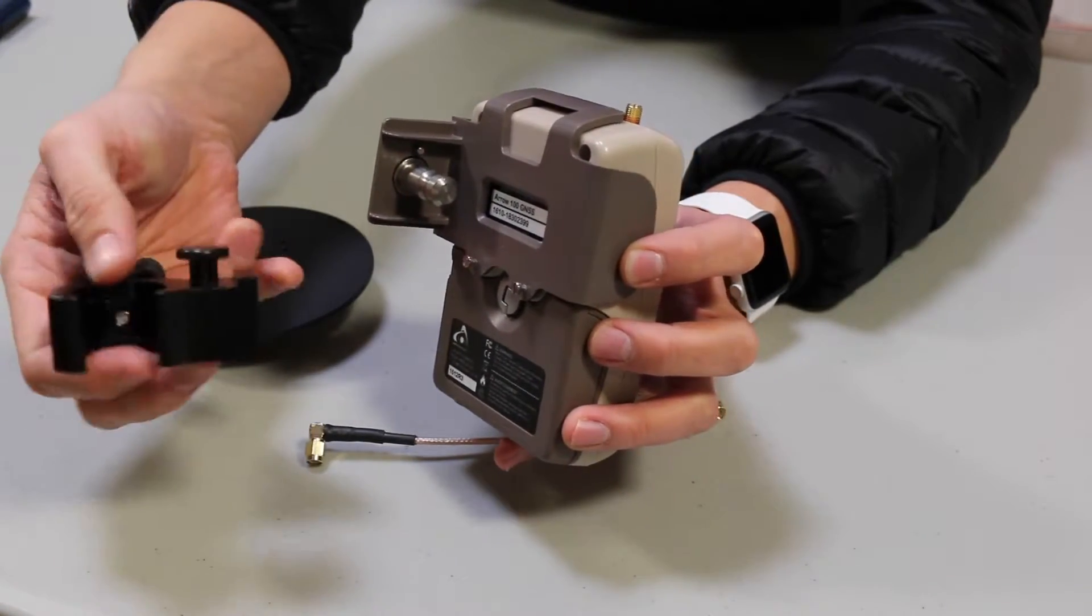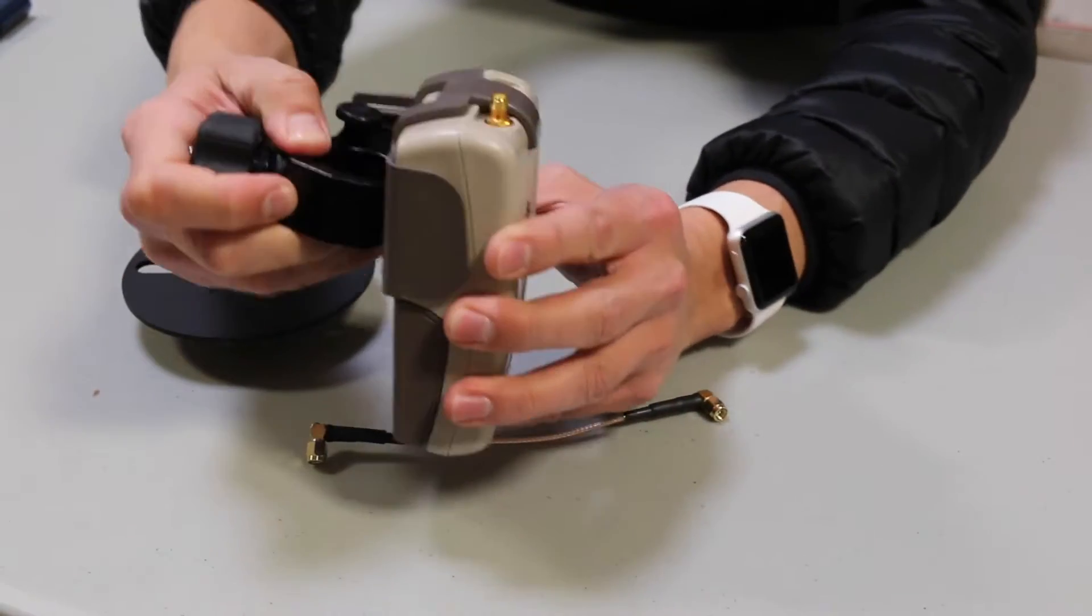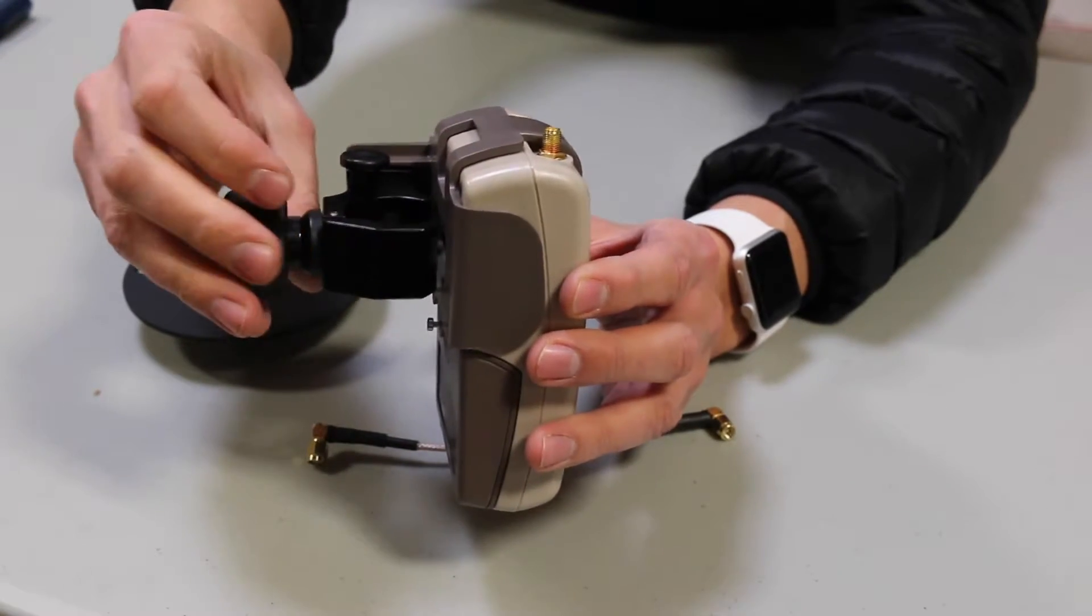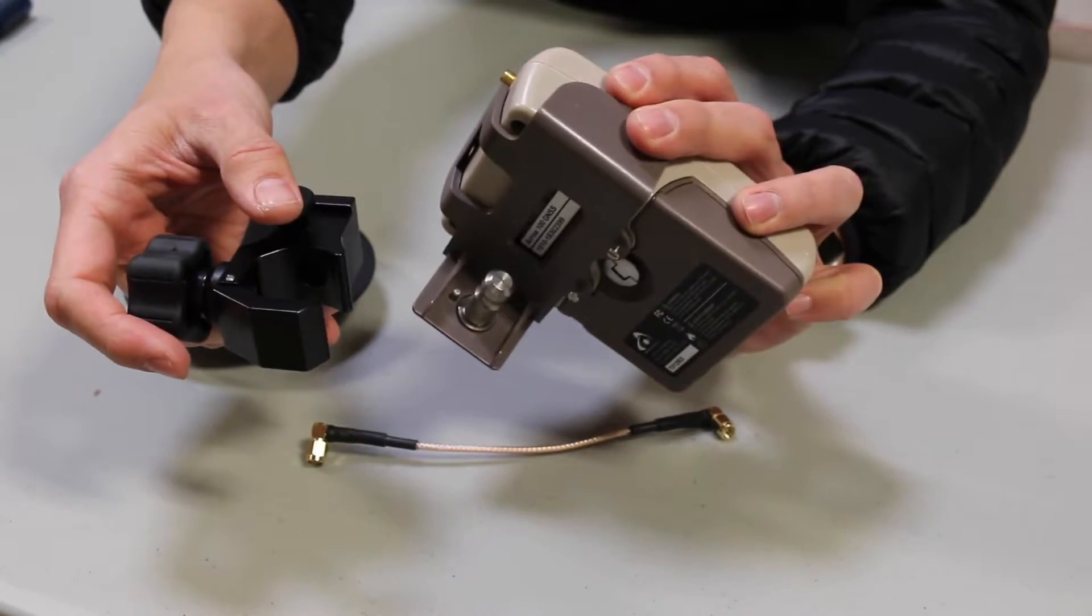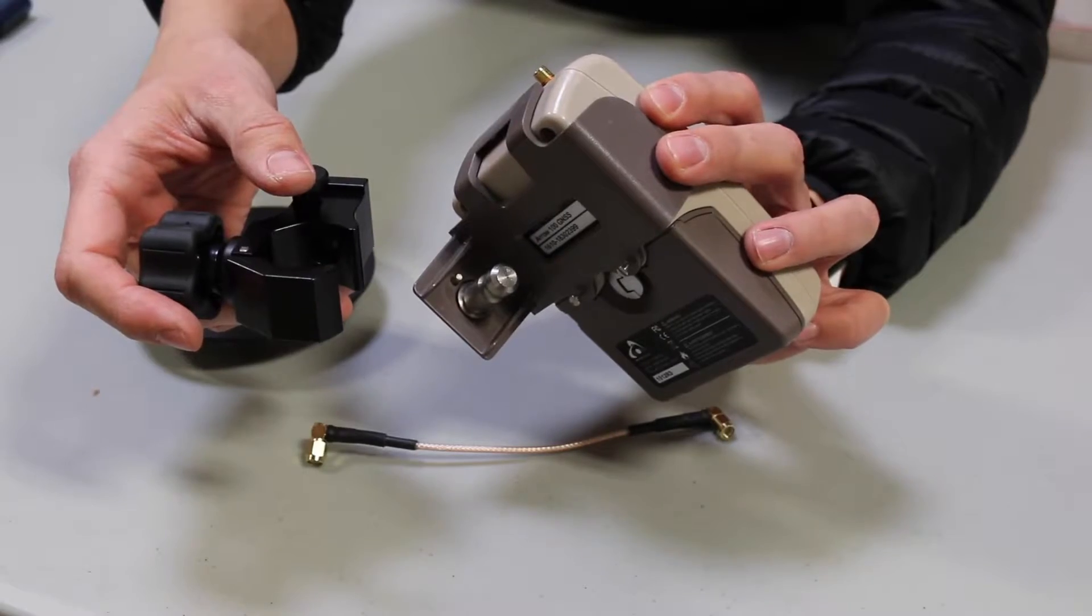You'll tighten the range pole on like that, and then once this is on the range pole you can grab this and it'll lock in like so. You can actually leave this on the range pole and then just pop this off and take the Aero 100 off so that the Aero 100 can be stored when you're traveling or have to hop back in the car to go to your next location.